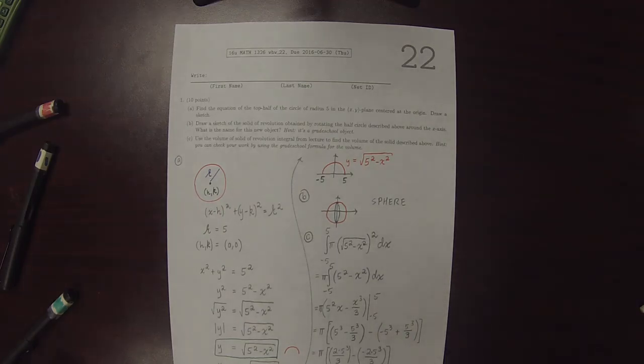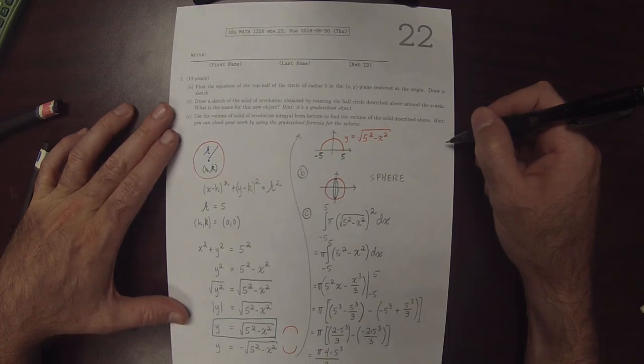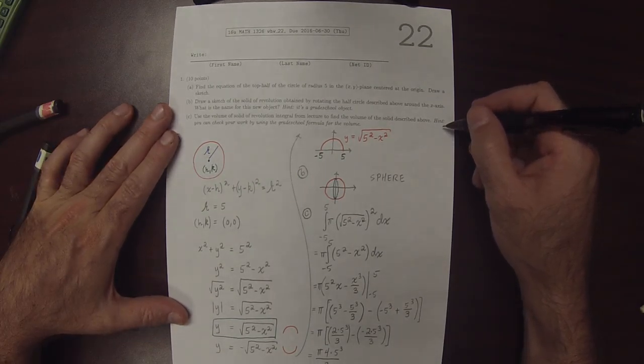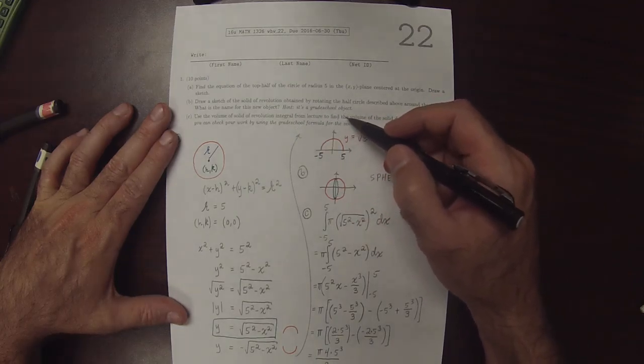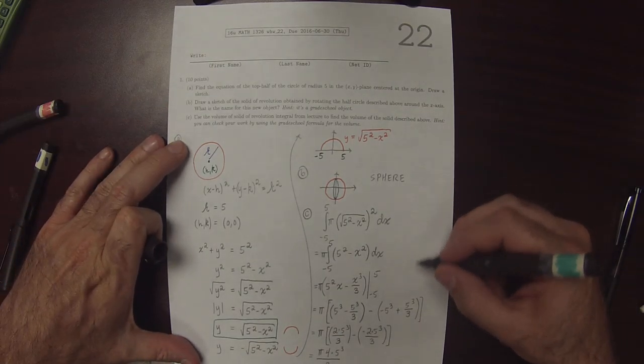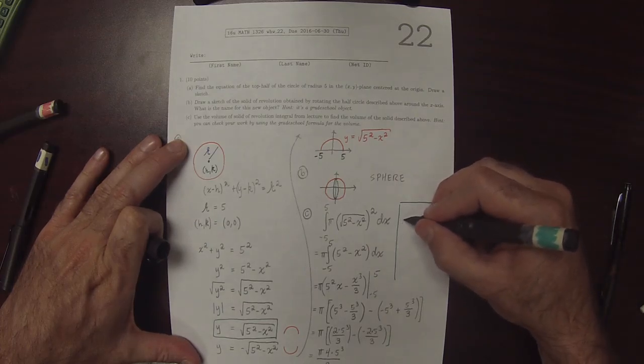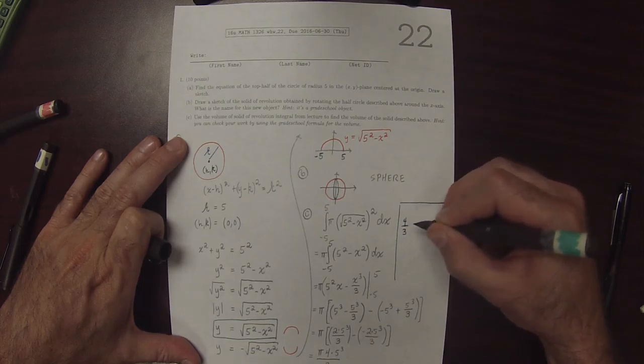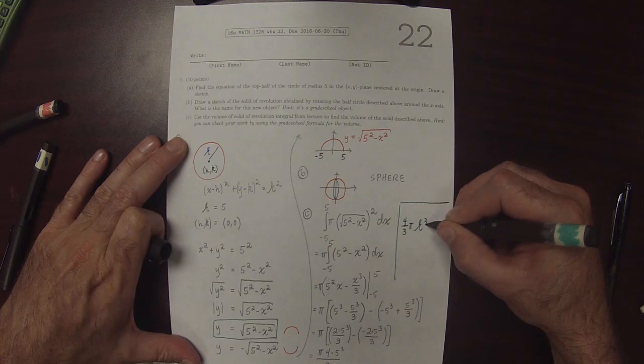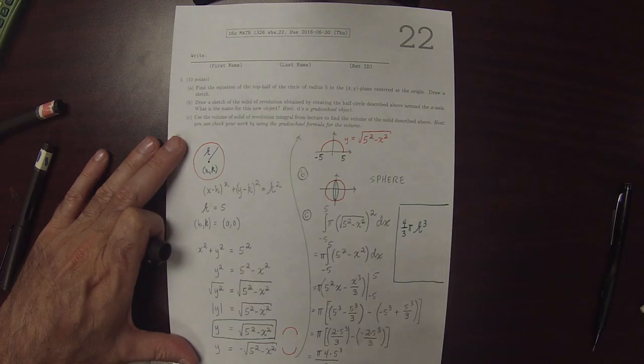And the reason why I never evaluated the 5 cubed is because I wanted to mention the hint at the end. The hint at the end says you can check your work by using the grade school formula for volume of a sphere. So just as a reminder, the grade school formula for the volume of a sphere is 4 thirds pi r cubed. And does that agree with what we found here? Yes. 4 thirds pi radius cubed.